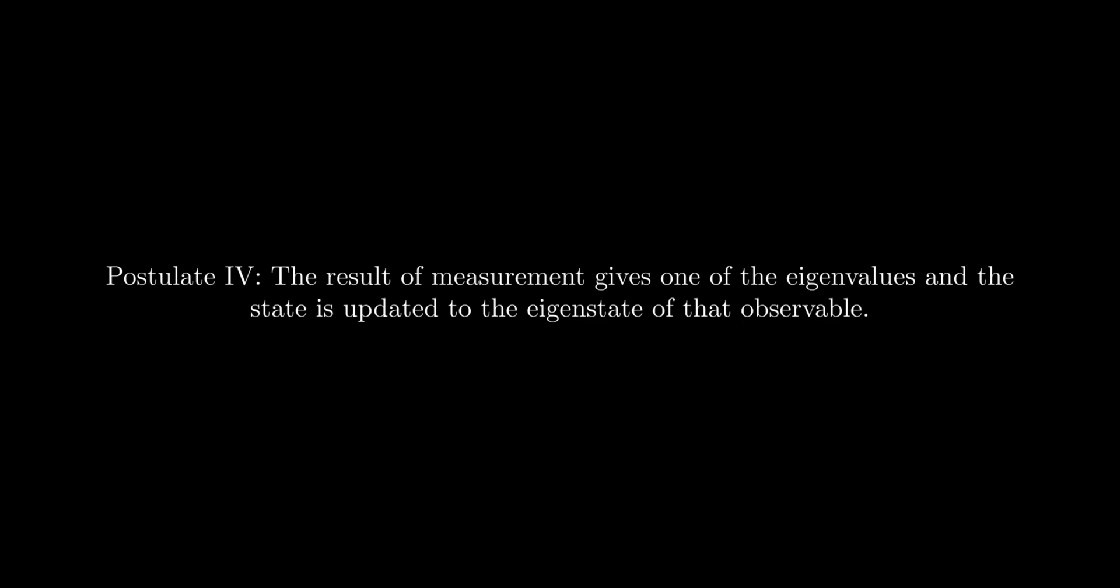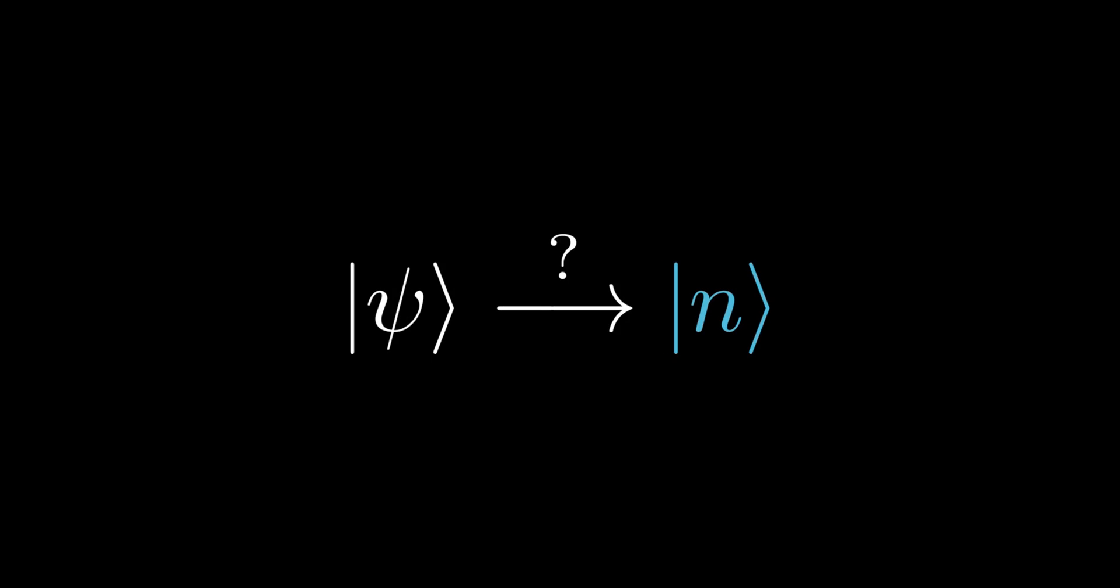It is tempting to think that the update of the state is merely a reflection of us has gained knowledge of this system. However, it is important to note that the ket represents the physical state of the system, rather than just our subjective understanding of it. Update of the ket reflects a physical disturbance of the system. A measurement simultaneously gains us knowledge and disturbs the system. This is the essence of quantum mechanics.